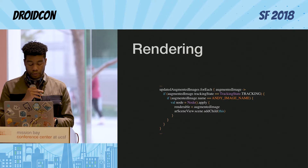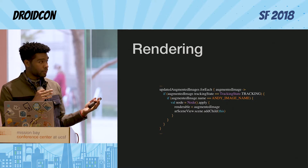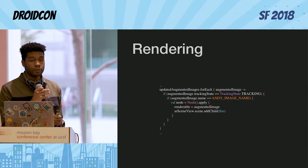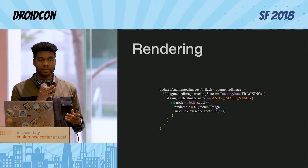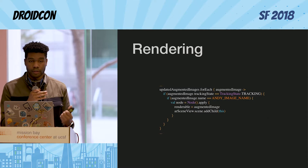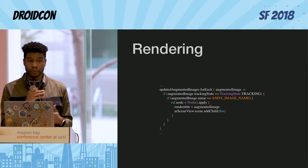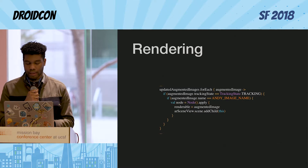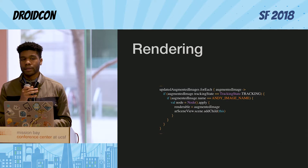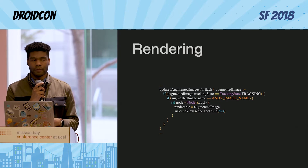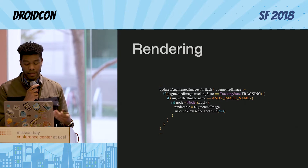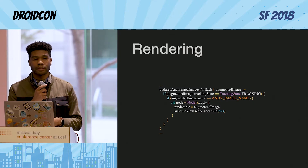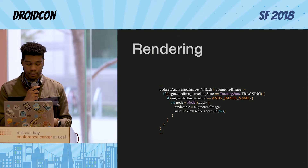So that's going to complete the augmented image flow. This experience can range from rudimentary to robust. I would consider Google's example very robust, and it really just all depends on your 3D objects themselves and the animations and things that you add on top to make sure that it looks pretty good.